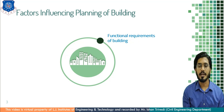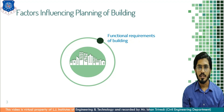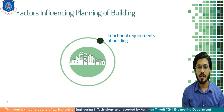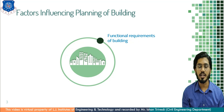First is the functional requirement of a building. We need to understand which type of building we are going to construct. In the real estate industry, we have public buildings, commercial buildings, industrial buildings, institutional buildings, hazardous, and storage. We have varieties of buildings based on occupancy. So first, we need to clarify the intent or purpose of the building which it is going to serve after completion.